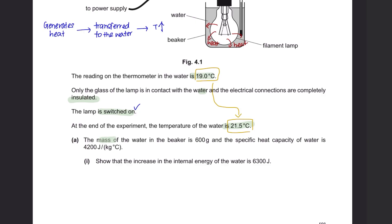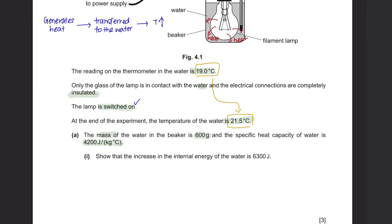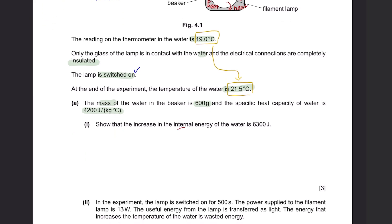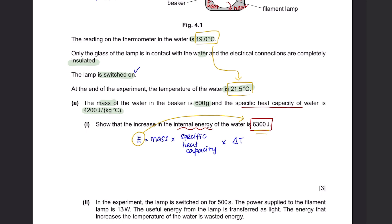Question E, Part 1: The mass of the water is 600 grams and the specific heat capacity of the water is 4200 joules per kilogram degree Celsius. Show that the increase in the internal energy of the water is 6300 joules. The formula is: energy equals mass times specific heat capacity times change in temperature. The mass of 600 grams converts to 0.6 kg, since the specific heat capacity is given per kilogram. Substituting: 0.6 × 4200 × (21.5 − 19) gives 6300 joules, confirming the increase in internal energy.